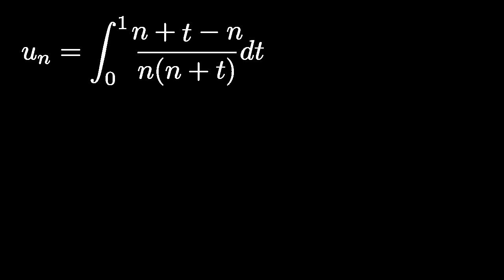Let N be a natural number and let's consider the following integral. We can add and subtract the natural number N from the numerator and make a U-substitution where U is equal to N plus T.